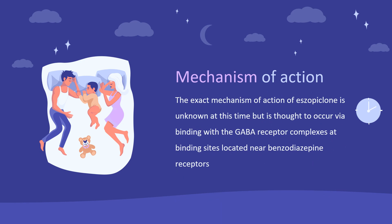The exact mechanism of action of Eszopiclone is unknown at this time, but is thought to occur by binding with the GABA receptor complexes at binding sites located near benzodiazepine receptors, possibly explaining its hypnotic and sedative effects. It has particular affinity for GABA receptor subunits 1, 3, and 5. Eszopiclone increases GABA channel currents significantly. GABA channels are major inhibitory channels that cause CNS depression when their receptors are activated.